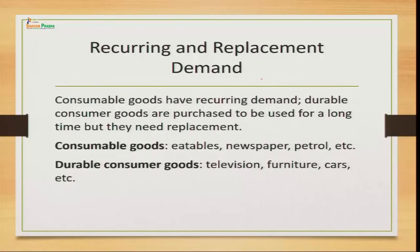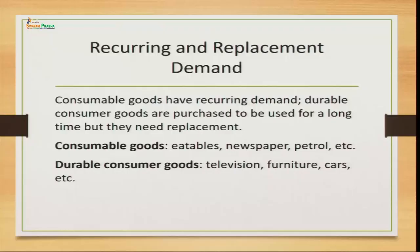Moving ahead, we have recurring and replacement demand. Recurring demand refers to goods which recur again and again — consumable goods like eatables, newspaper, a cup of tea. We consume them, they finish, and we demand them again. The goods that are of consumable nature and not kept for a longer period of time — demanded on a daily, weekly, fortnightly, or monthly basis — have recurring demand. For example, demand for bread, demand for butter — these are demanded again and again.